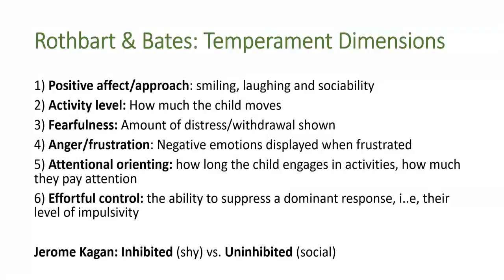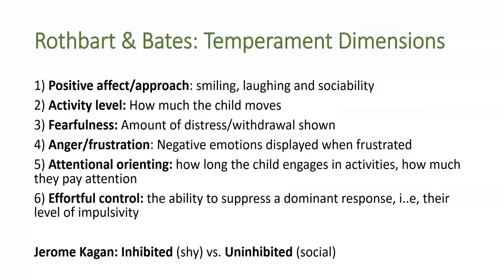Rothbart and Bates extended on Thomas and Chess by fine-tuning the temperament profiles. They believe that instead of three broad categories, children's temperament actually differs on seven main dimensions. These include positive affect or approach, which captures the child's social ability; activity level, or how much the child moves; fearfulness, or the amount of distress or withdrawal shown; anger or frustration, or the negative emotions displayed when a child is frustrated; attentional orienting, or how long the child can engage in activities; and effortful control, or their ability to suppress a dominant response — essentially their level of impulsivity.